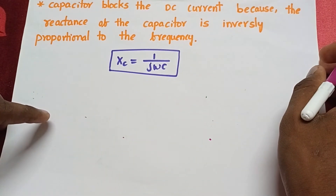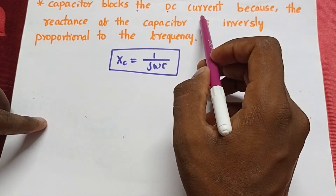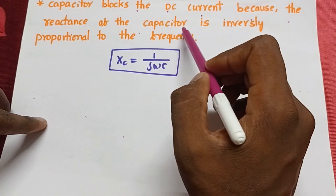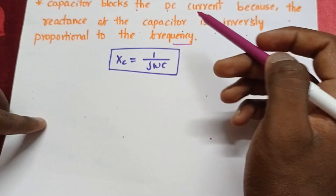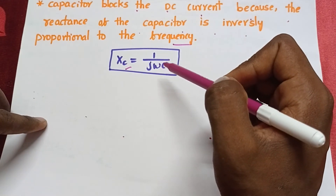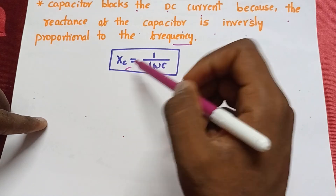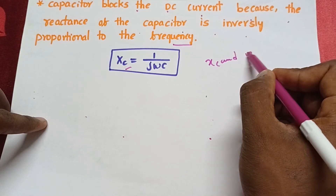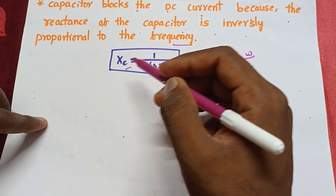Next, observe here. The capacitor blocks the DC current because the reactance of the capacitor is inversely proportional to the frequency. Xc is the reactance of the capacitor, equal to 1/jωC. Xc and omega are inversely proportional to each other.